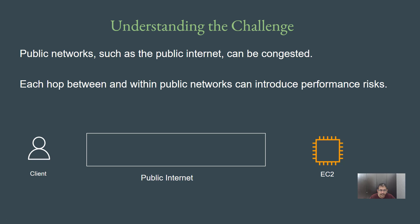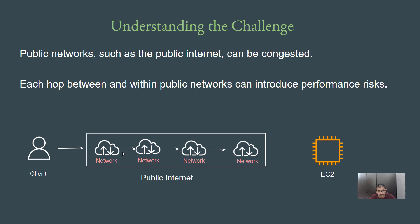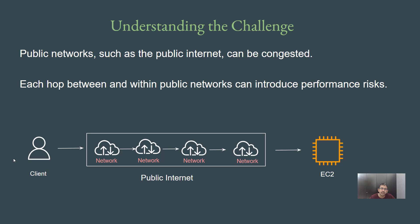When you discuss about the high level workflow, the client goes through the local ISP, the traffic might flow through a network, then another network, then another set of networks, and at the end it might reach the EC2 instance — and the same goes with the return traffic. Each hop introduced here can lead to a certain set of performance risk. You can also see what hops are involved for packets flowing from source to destination using various tools like traceroute.